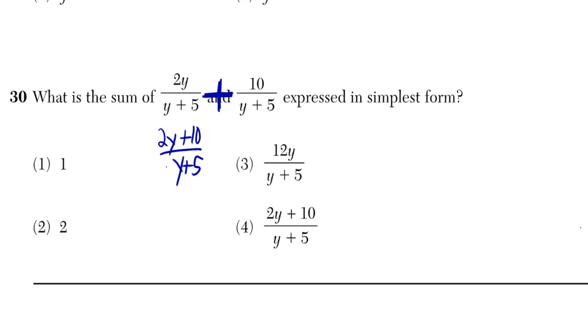What you can do at this point is you can factor out 2 from the top, and then the other factor would have to be y plus 5. The bottom we're not going to do anything with. The bottom is just going to stay as y plus 5.